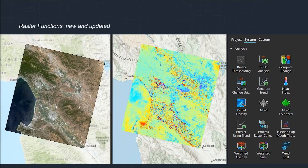We have new raster functions — several new and updated ones available with the Image Analyst extension. I particularly love four: CCDC Analysis, Compute Change, Detect Change Using Change Analysis, and Trend to RGB. My favorite is the Compute Change function. It enumerates the pixel changes that occur between two raster datasets, computing both absolute pixel value changes and categorical changes for thematic rasters — a game changer. For categorical changes it generates a layer depicting all areas that changed from one class to another. This is a huge moment for change detection workflows.